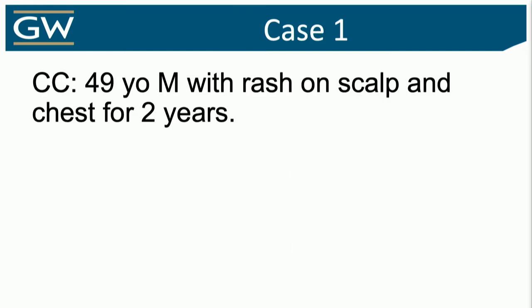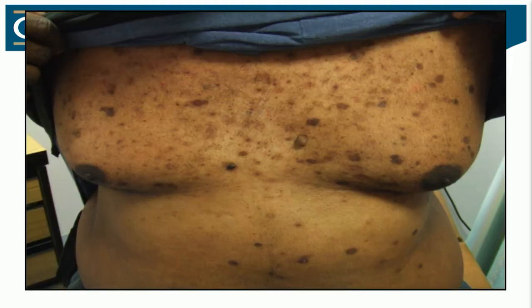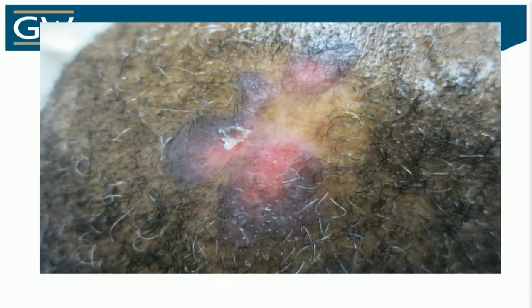Case one: 49-year-old man with rash on scalp and chest for two years. We can see multiple atrophic brown, well-demarcated plaques on the chest and abdomen. On the scalp, we see a violaceous purple, well-defined scarring plaque — and especially on a hair-bearing area, that's important. There's a scarring alopecia within this active plaque, with some involvement in the concha bowl.